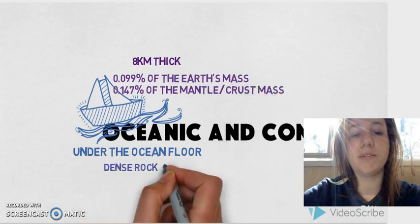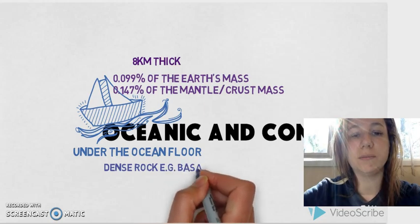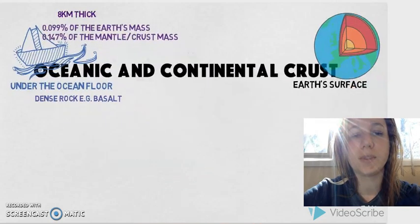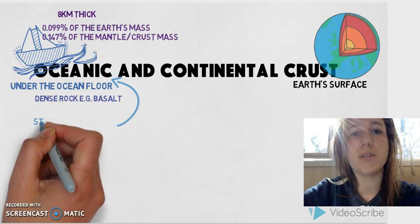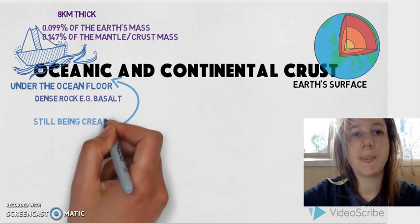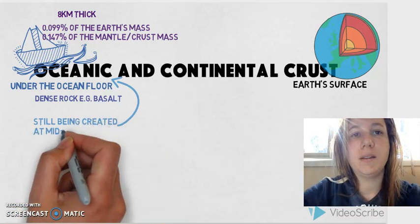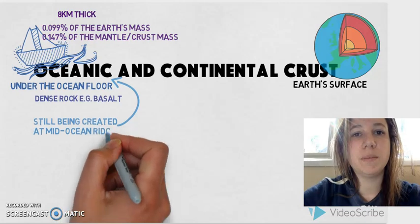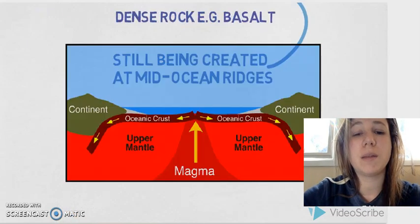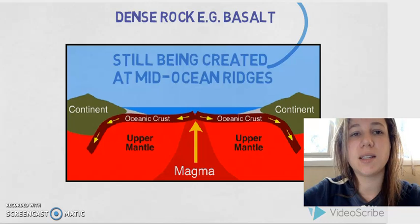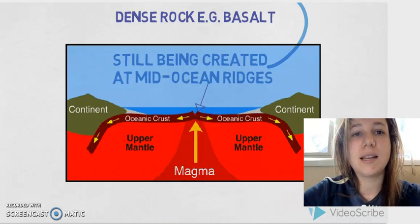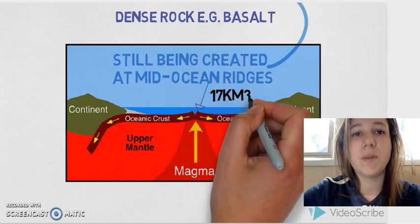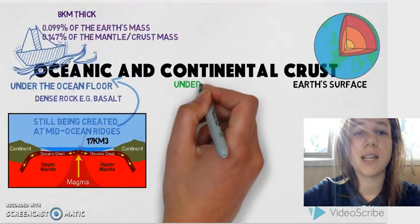The oceanic crust is made up of dense rock like basalt. Something unique to the oceanic crust is that it is still being created today. Where we have divergent plate boundaries — which means they move away from one another, as you can see in the diagram — we get mid-ocean ridges where the magma breaks through the crust and is cooled to form new rock. We can get about 17km³ of new oceanic crust each year.